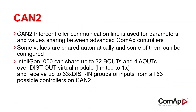The CAN2 intercontroller communication line is used for parameters and values sharing between advanced COMAP controllers. Some values are shared automatically and some of them can be configured.